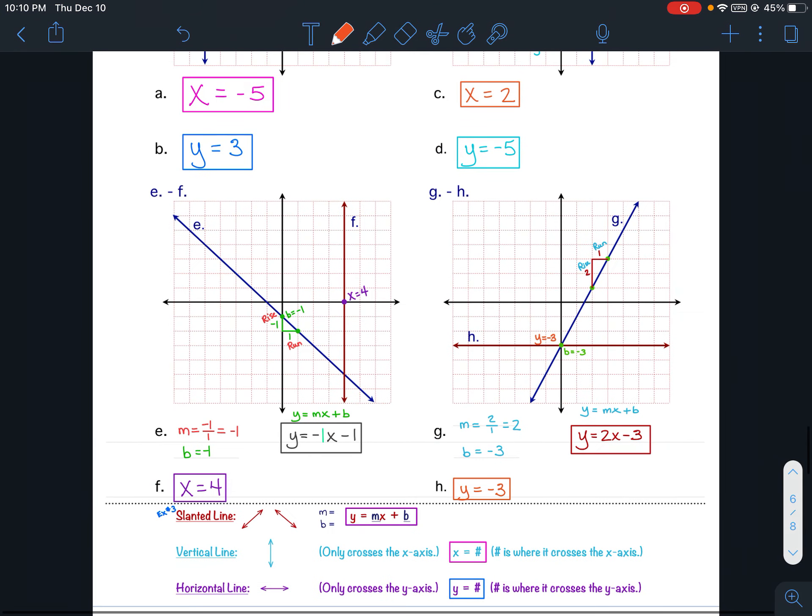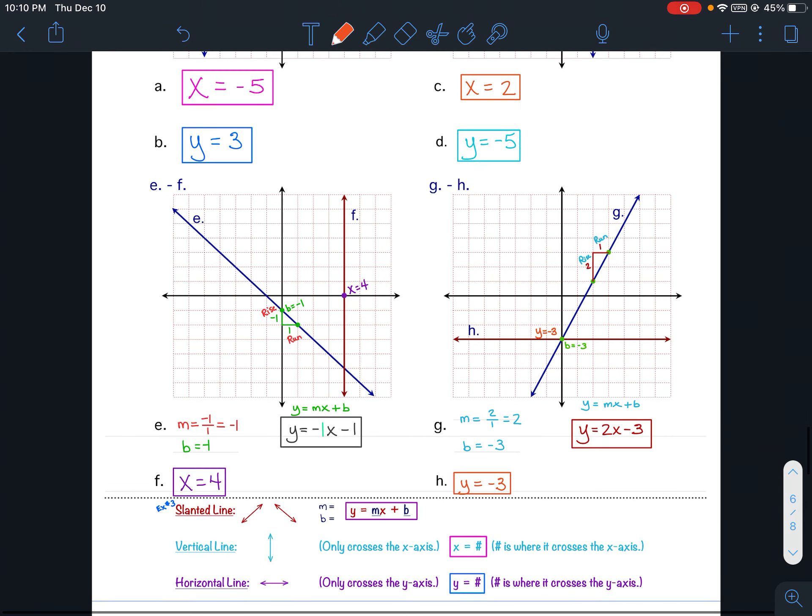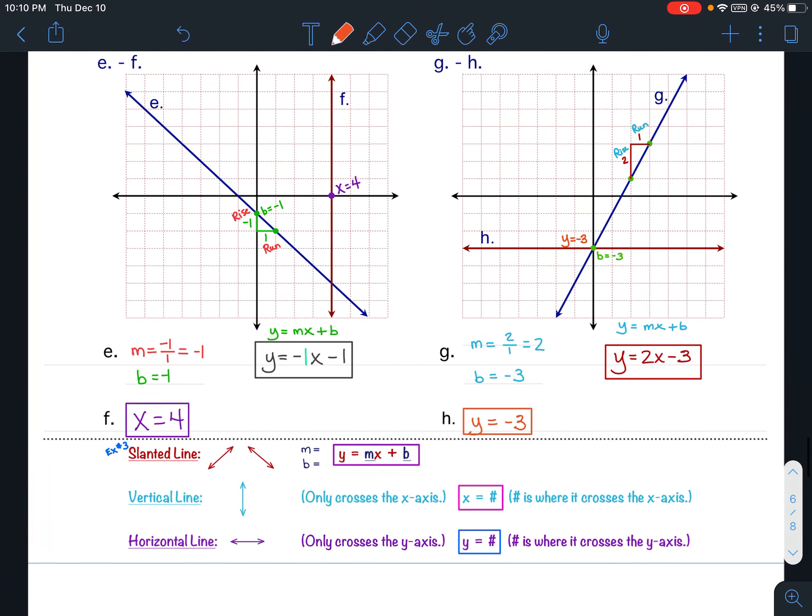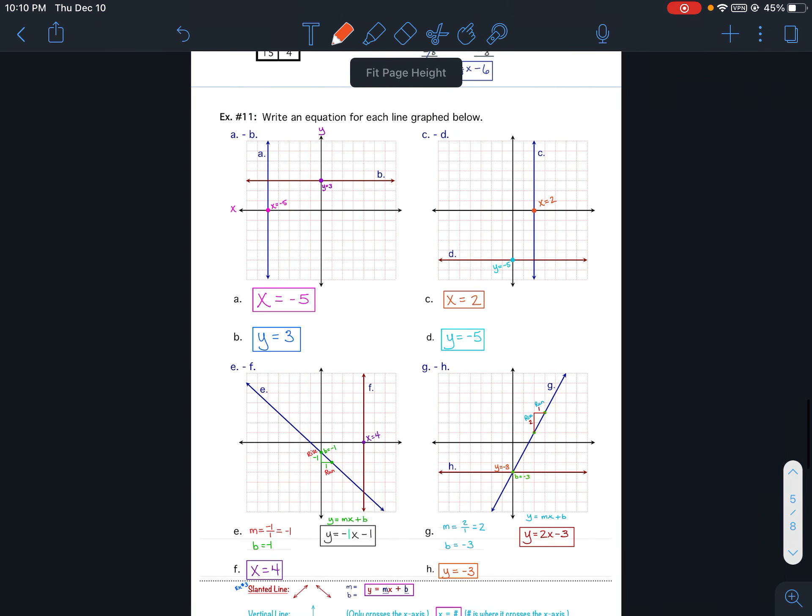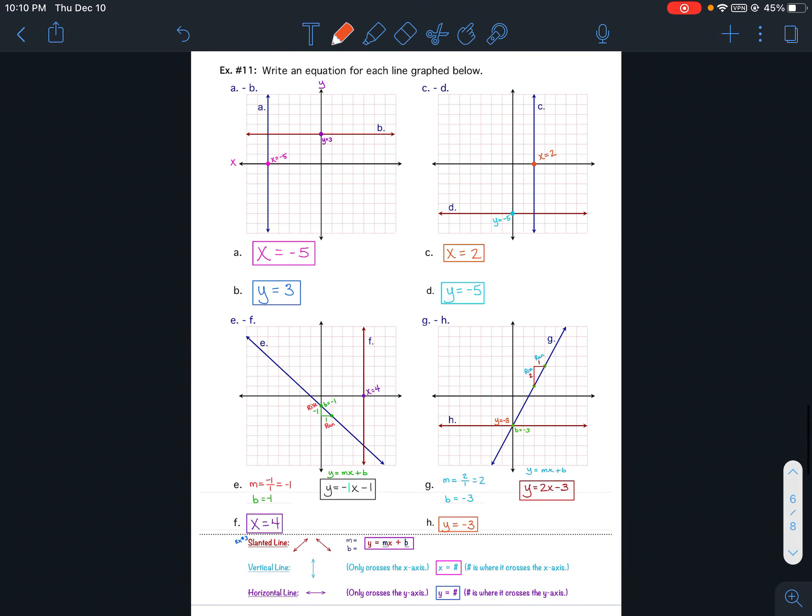So, once again, in this lesson, you'll have three types of equations. Slanted, vertical, or horizontal. If it's slanted, you have to find m and b, and your equation will look like y equals mx plus b. If it's vertical, it only crosses the x-axis, and it'll look like x equals number, like f right here. If it's a horizontal line, it will only cross the y-axis, like h right there. And it's going to be y equals number. Alright, so that is it for example 11, and that's actually it for the notes. If you have any questions, please do not hesitate to ask.